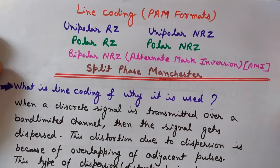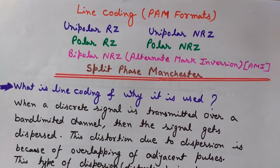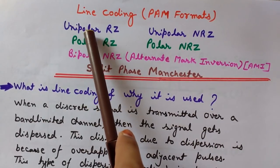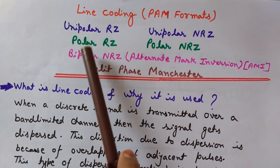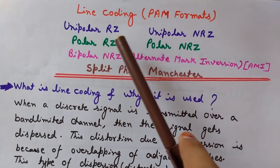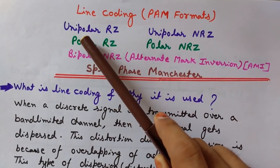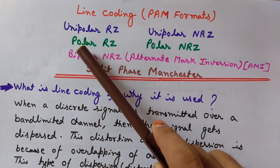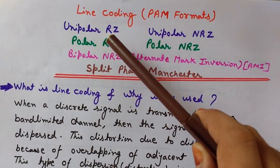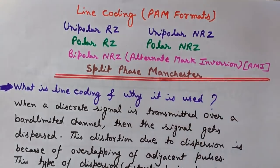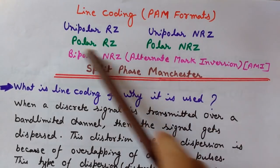Before starting each line coding technique, let me give a brief idea about unipolar, polar, bipolar, RZ, and NRZ. Unipolar, as the name suggests, means single pole — we have only the positive part. Polar and bipolar have two polarities, both plus and minus, using positive and negative amplitudes to represent the binary pulses. RZ stands for return to zero and NRZ stands for non-return to zero.